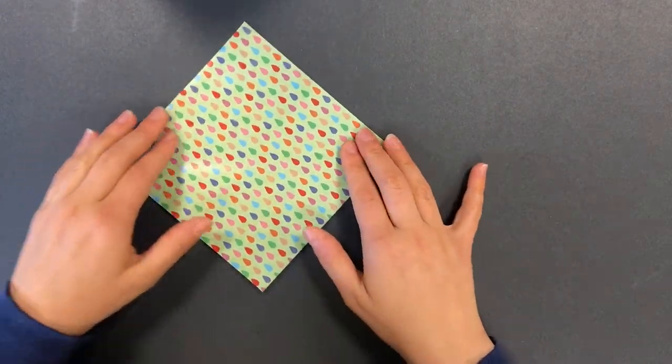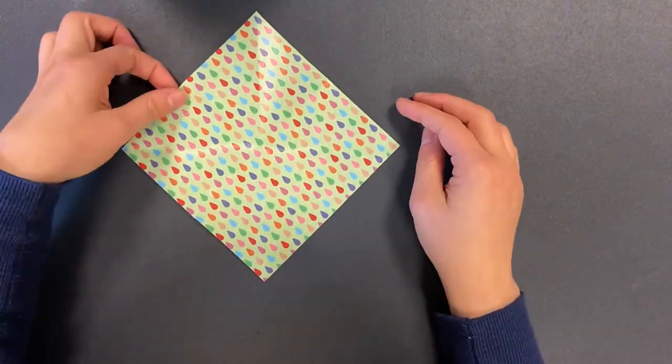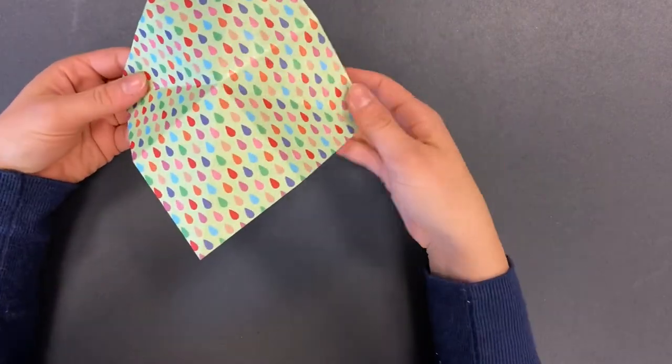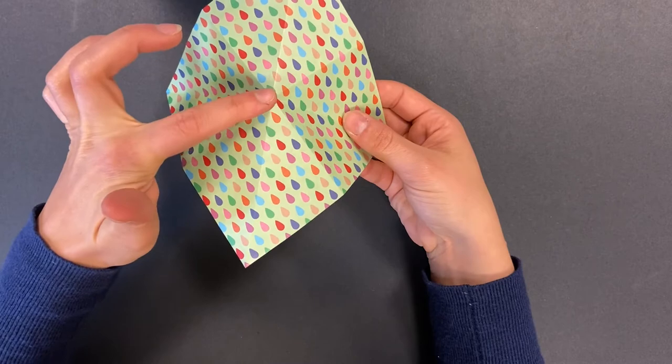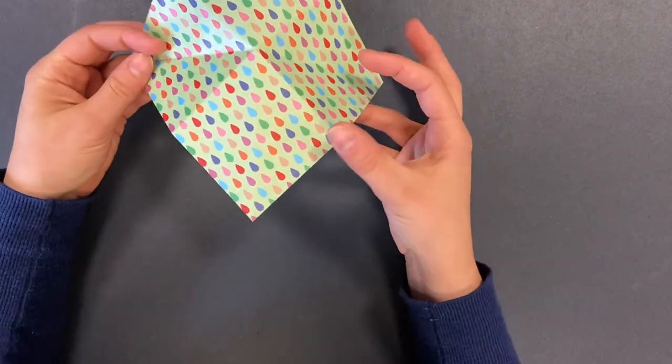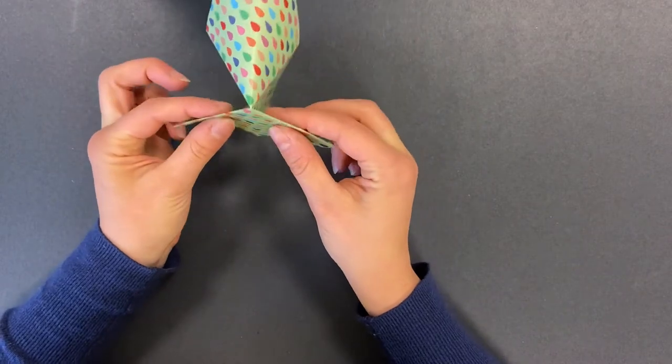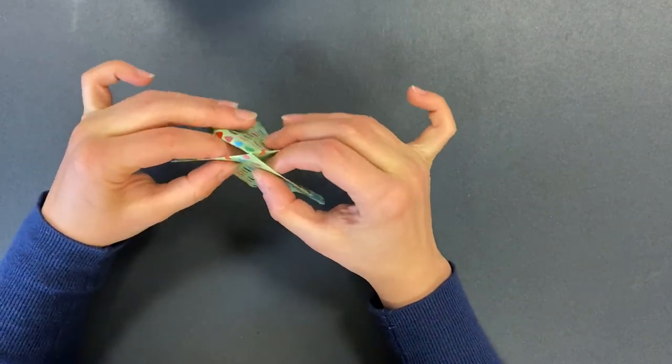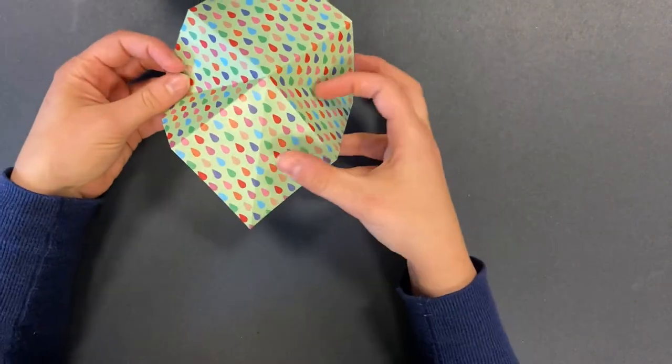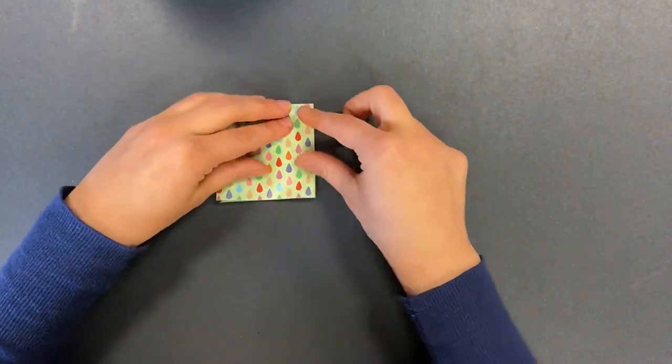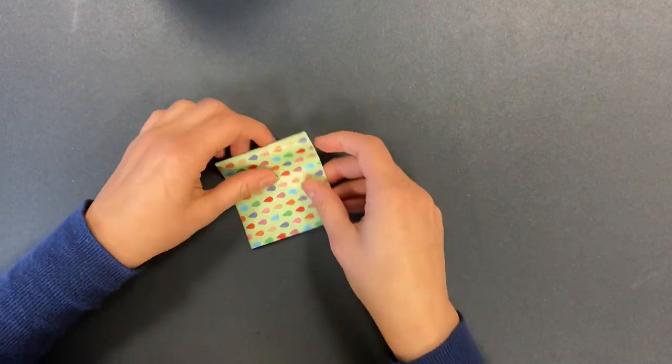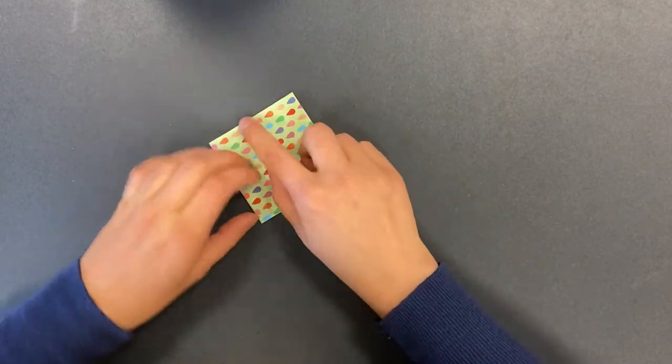Now we're going to compress the paper in on itself so that we get a nice little compressed box shape. So you're going to pick the paper up. These lines here are going to become your new edges. And you're going to fold the paper in on itself against the folds that you just created.